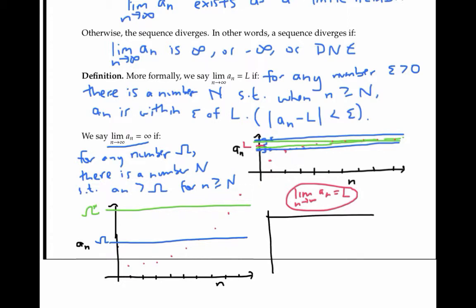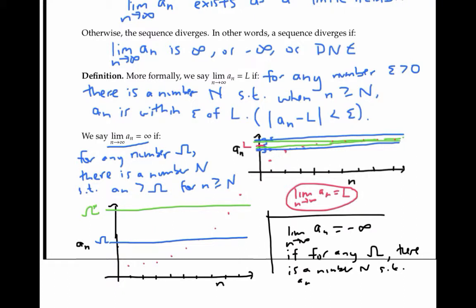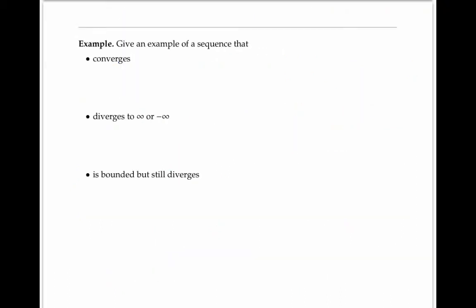There's a similar definition for the limit as n goes to infinity of a_n equaling negative infinity. Now we just need to say that for any big negative number omega, there's a number N such that a_n is less than omega for little n bigger than or equal to capital N. Please take a moment and try to come up with an example of a sequence that converges, a sequence that diverges to infinity or negative infinity, and a sequence that's bounded but still diverges.